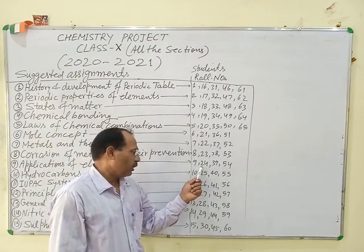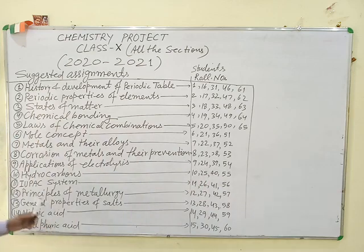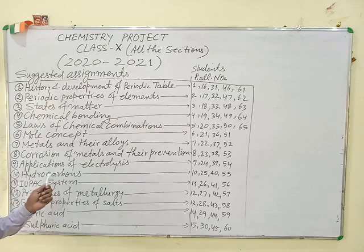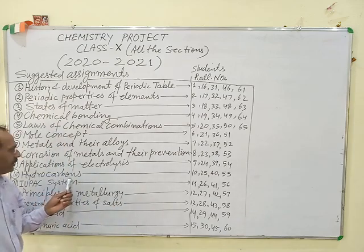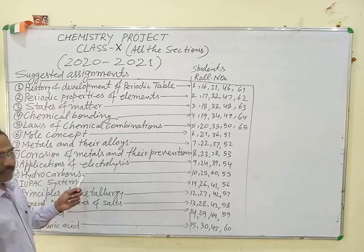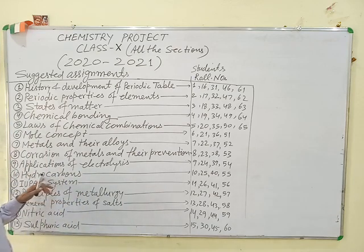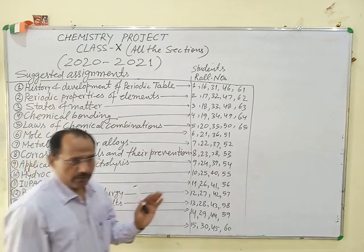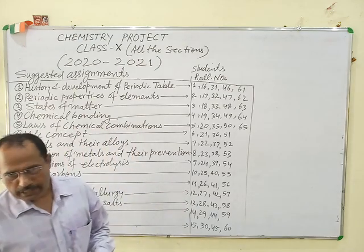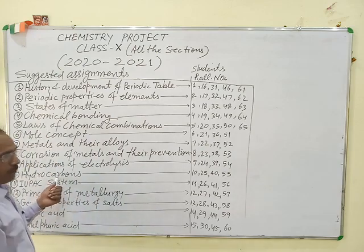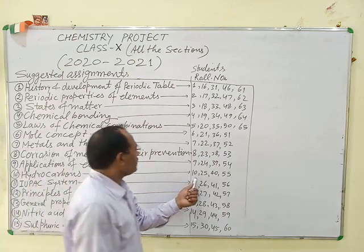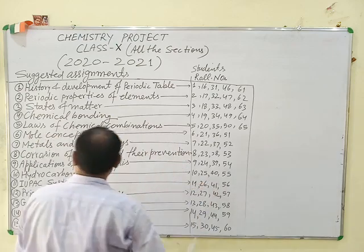Next, applications of electrolysis for roll numbers 9, 24, 39 and 54. Hydrocarbons — organic compounds containing carbon — include many types of hydrocarbons. We discuss all types including their classification, for roll numbers 10, 25, 40 and 55.